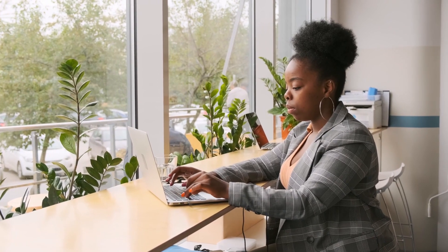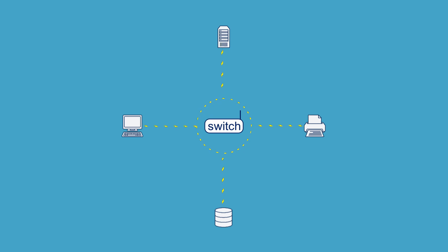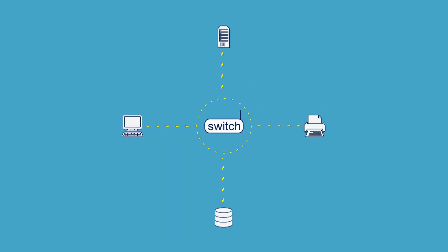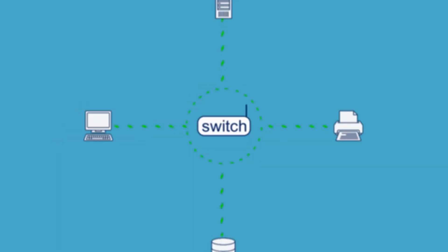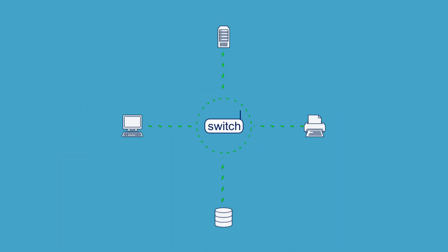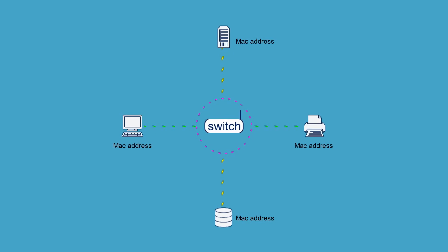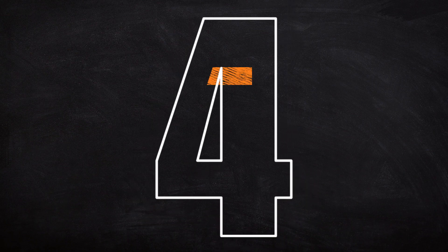Let's take a closer look at the local area network. Modern LANs usually take the shape of a spoke-hub distribution paradigm, also known as a star topology. At the center is a switch, which all local devices must connect to, either through wired or wireless connections. Initially, switches simply repeated transmissions to all connections, leaving it up to devices to determine what was theirs and what wasn't. Today's switches operate at a second level of the network, using devices' MAC addresses to direct transmissions to their destinations.